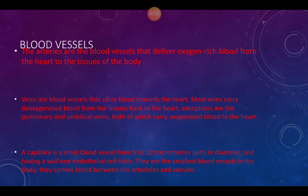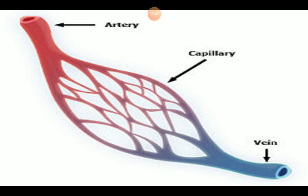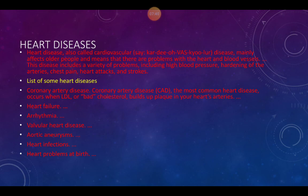Capillaries are small blood vessels, about five to ten micrometers in diameter, with a wall only one endothelial cell thick. They are the smallest blood vessels in the body and convey blood between arterioles and venules. The artery doesn't go directly to the cells — it divides into capillaries, each capillary supplies individual cells, and then the blood flows into the veins.